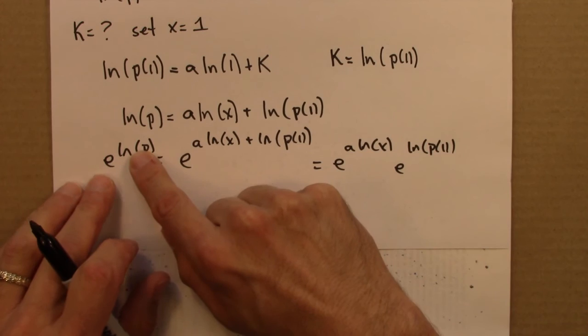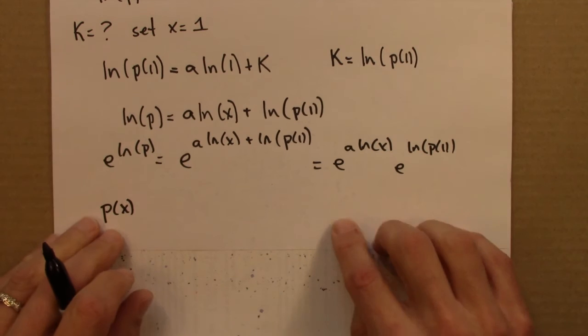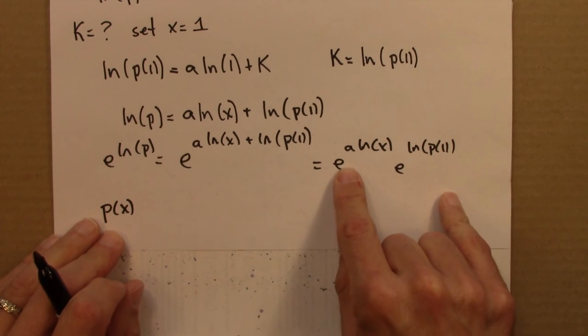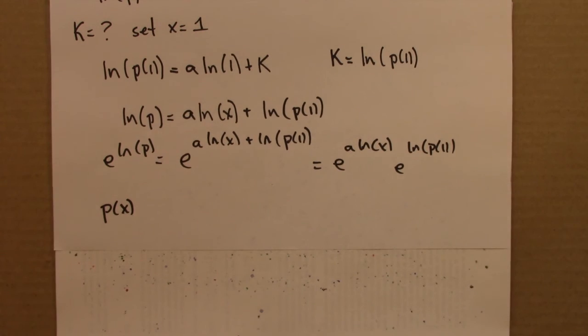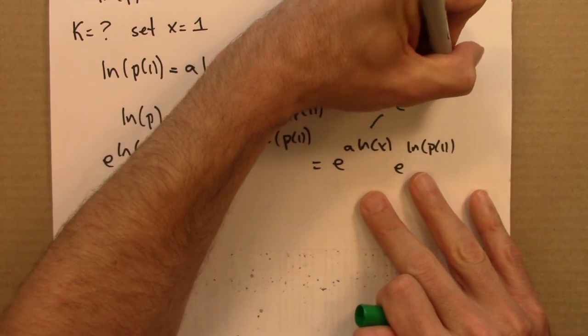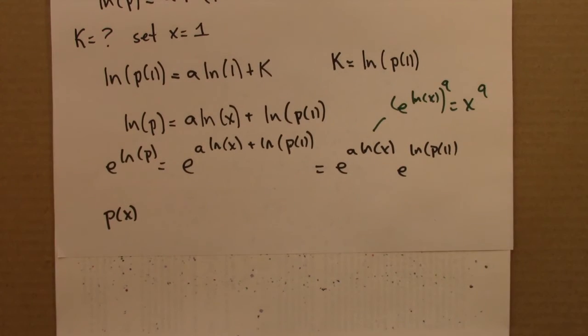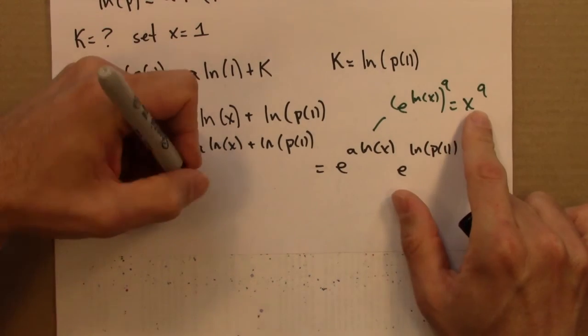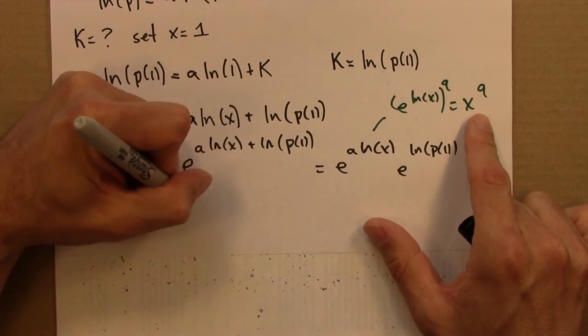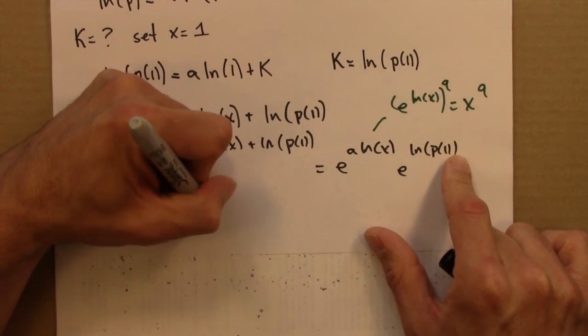e to the a log x, that could be e to the log x to the a. So that's just x to the a. Aha! Power law. So this is x to the a. And e to the log P1 is just P1.